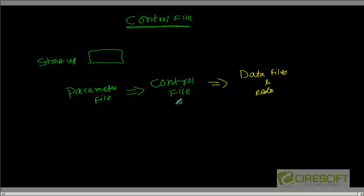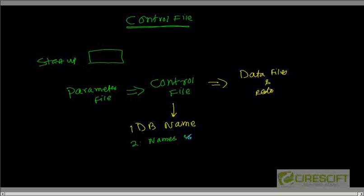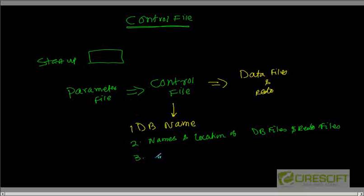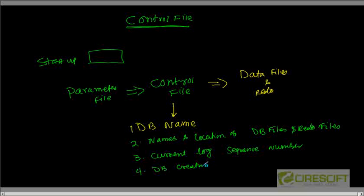The control file contains several things. First is the database name. Second is names and location of data files and redo files. Third is the current log sequence number. Fourth is the database creation time. Fifth is checkpoint information.